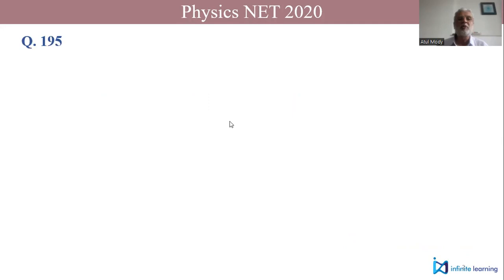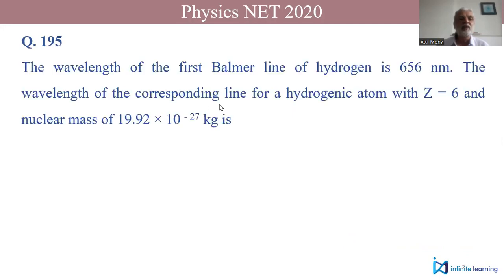The question code for the problem is 195. It says that the wavelength of the first Balmer line of hydrogen is 656 nanometers. The wavelength of the corresponding line for a hydrogenic atom with Z equal to 6 and nuclear mass of 19.92 × 10^-27 kilograms is requested.